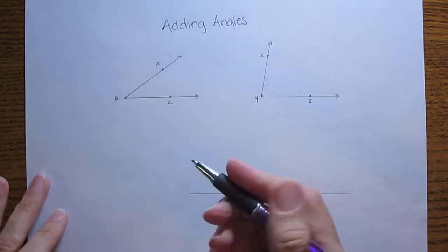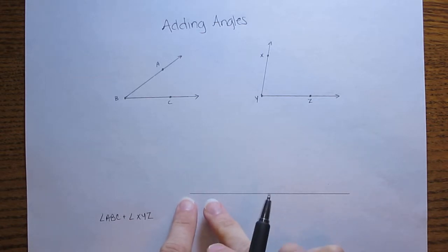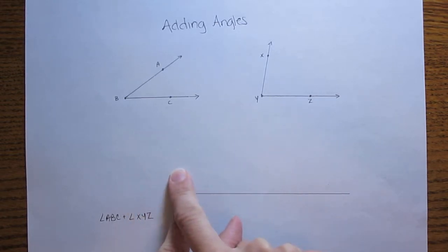To add angles, so if what I'm going to do here is I'm going to add angle ABC plus angle XYZ, what I'm going to do is I'm going to copy angle ABC onto this segment, and then from there I'm going to copy angle XYZ onto the segment. So one at a time I go through the steps for copying an angle.